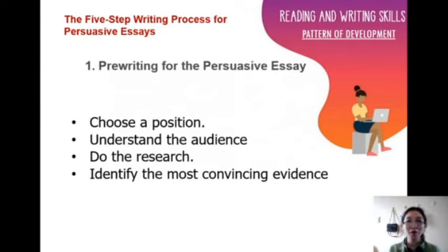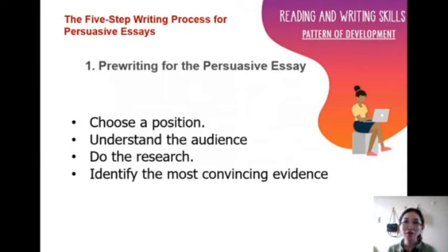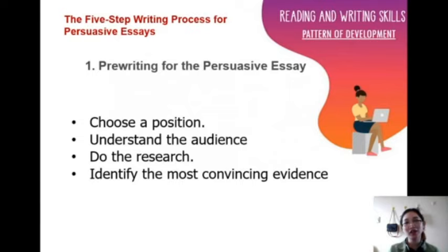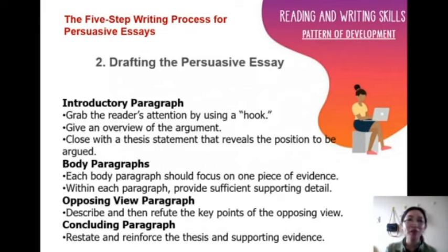In the pre-writing stage, you are going to choose a position — are you for or against the topic? Then you need to understand your audience. You need to understand their perspective and how you can convince them, because if you do not consider your audience, you will not convince them to agree with you. Do the research — it is very important that you know how to gather and dissect information, because a lot of information is available and it is your job to choose which to include. After gathering all the information, identify the most convincing evidence — you want the best out of everything you gathered.